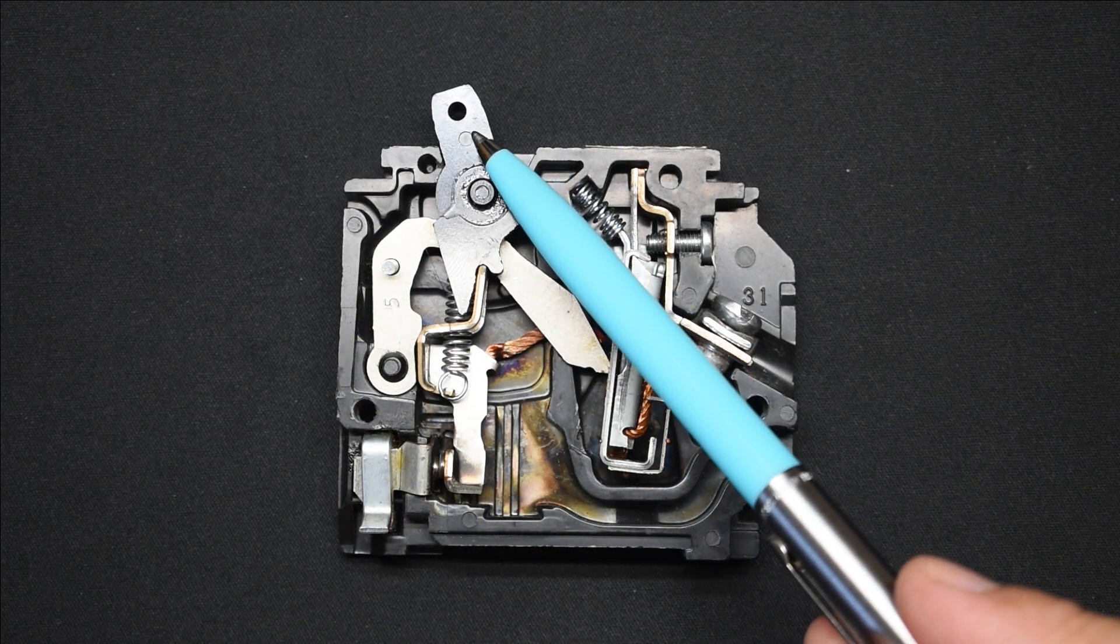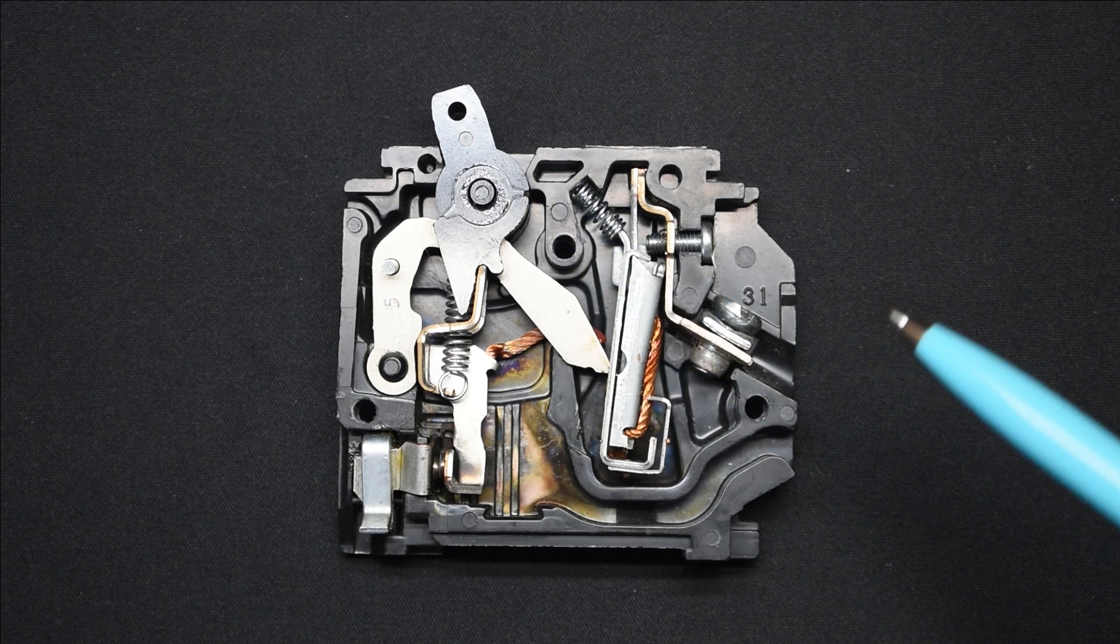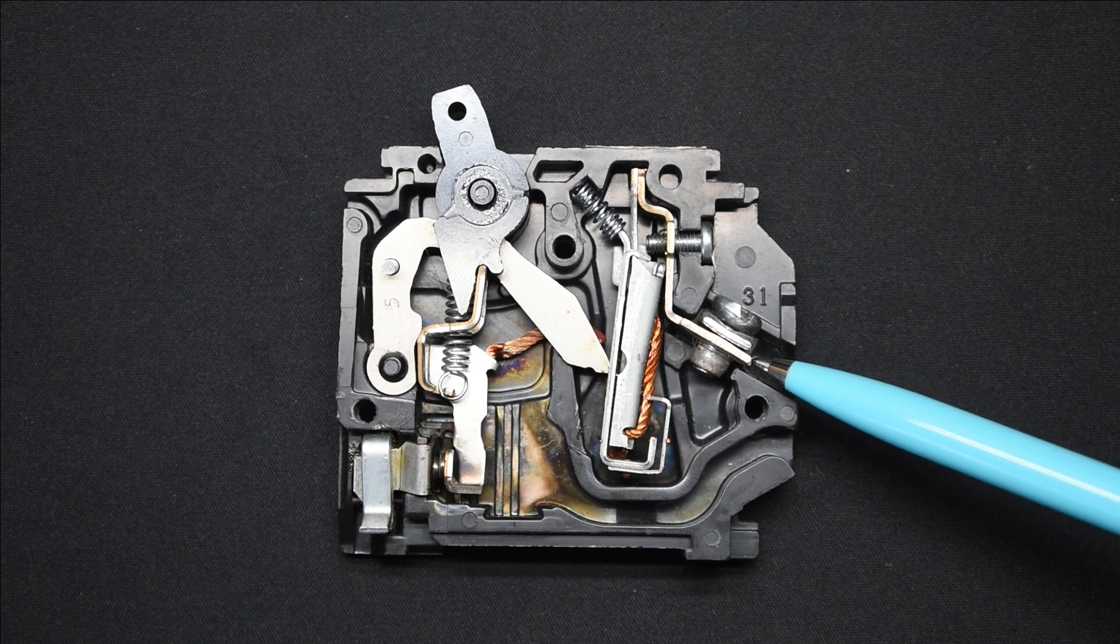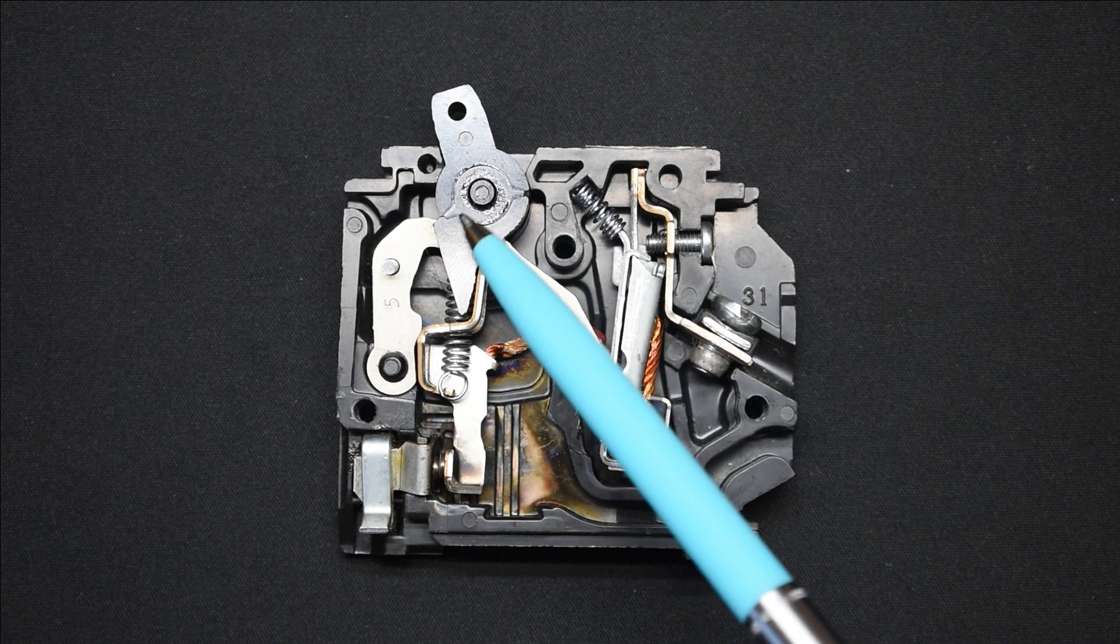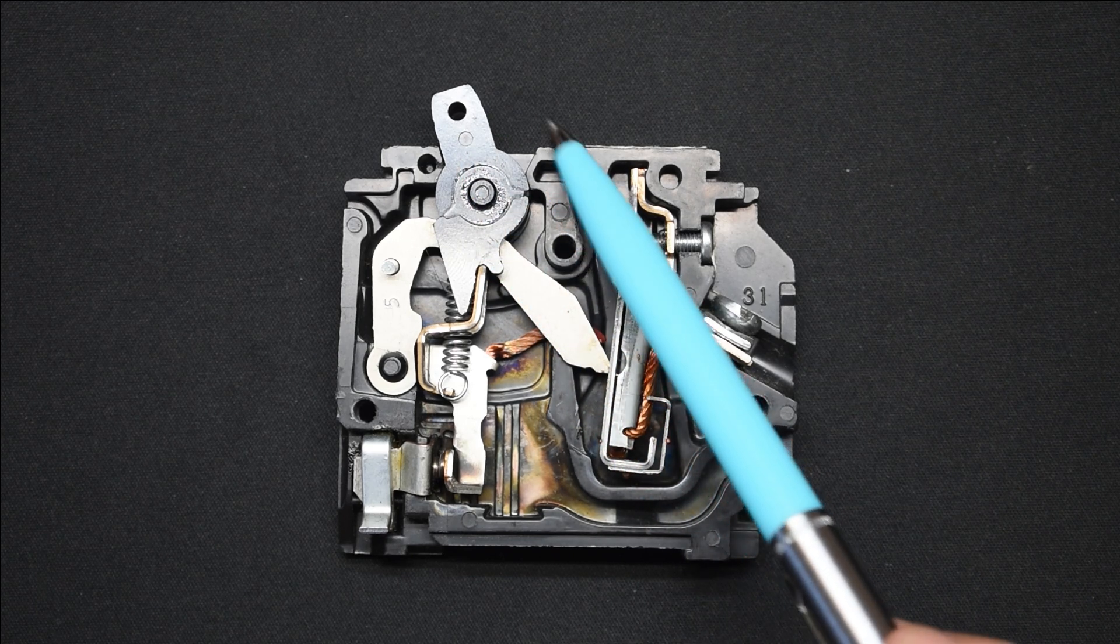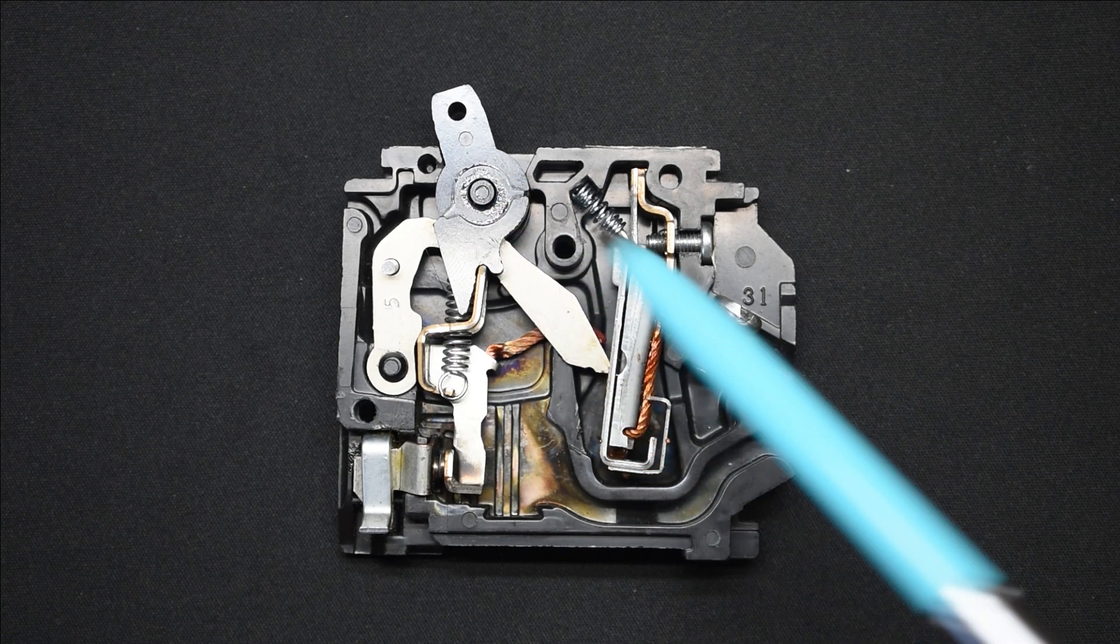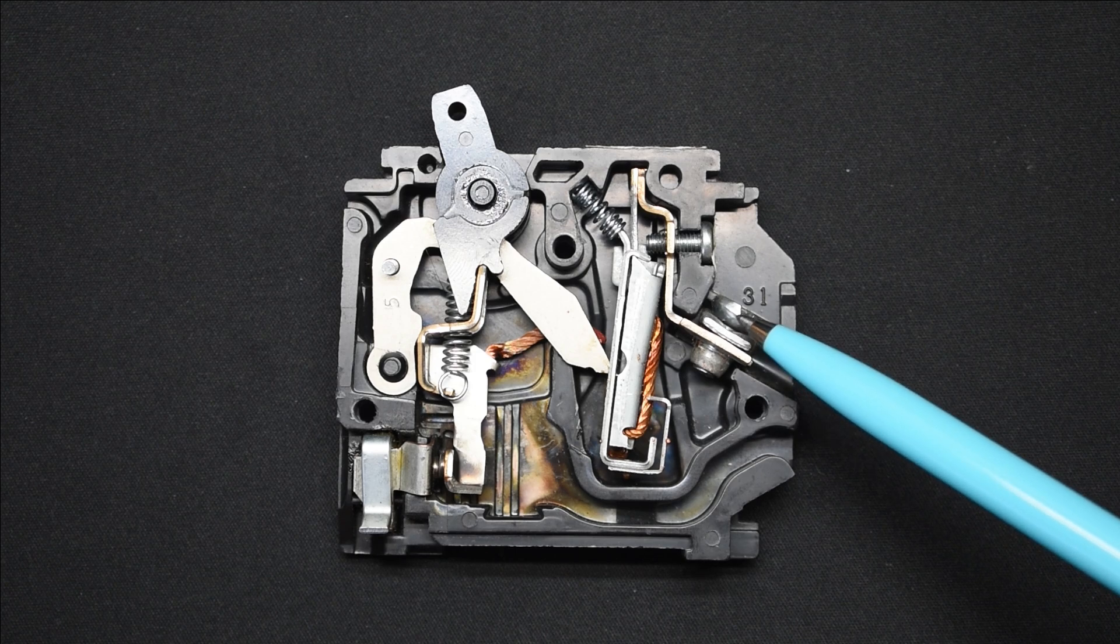If you go to reset the circuit breaker and it just keeps popping back to the middle position, the one thing you're definitely going to want to do is remove the wire going to the branch circuit - loosen the screw and pull it out. Once you do that, put the circuit breaker to the off position to reset it and then back to the on position. If the breaker no longer trips, you're going to know the problem is with the branch circuit, more than likely shorted.